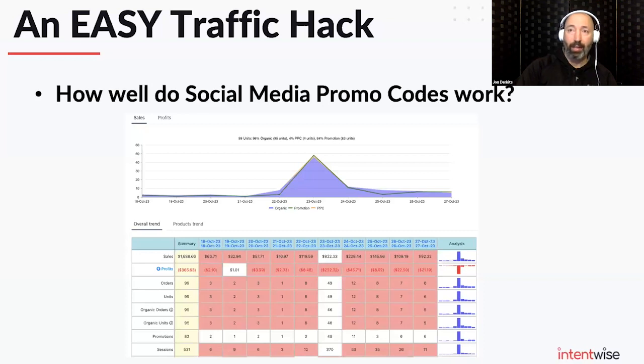The day after the spike on October 23rd, I searched Google for AMZN.TO and my brand name, and found all the Facebook deal groups that picked this up. They posted it on the 22nd and early 23rd, and you can see the spike that happened as their members rushed to get the product. Daily sessions were typically less than 10 — which is why the product was in the position it was. But on October 23rd, when the promo went live, there were 370 visits, all from Facebook deal groups, with a little halo effect for the days after I kept the promo running.